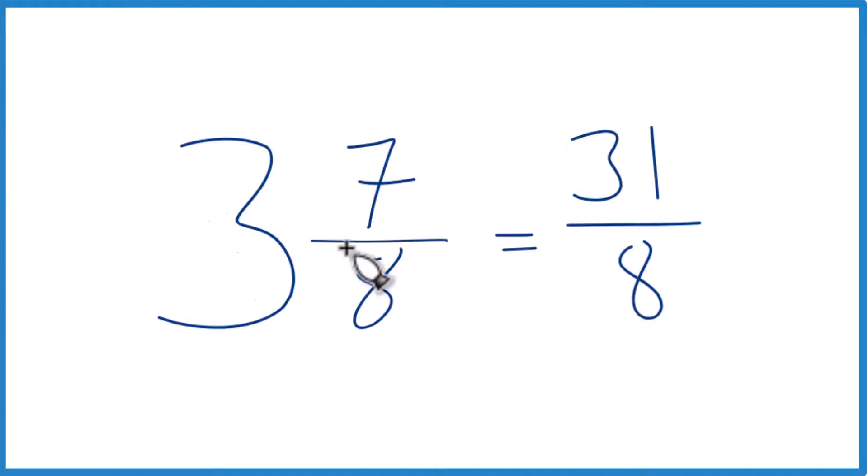Let's do that one more time. 3 times 8 is 24. 24 plus 7, that gives us the 31. We just bring that 8 across, and we're done.